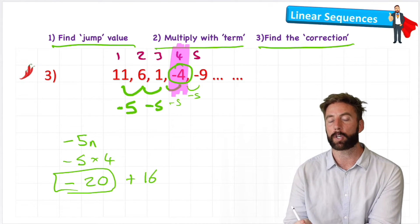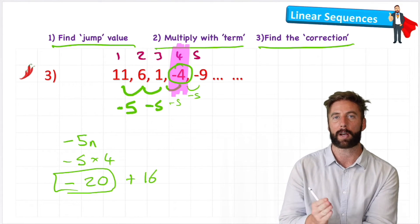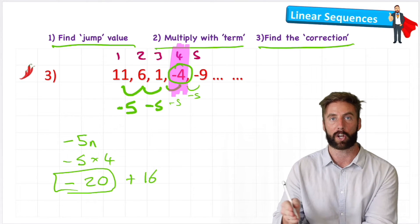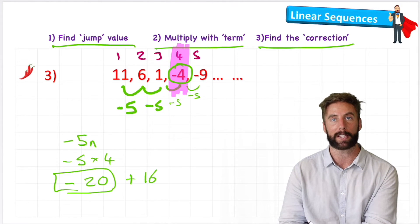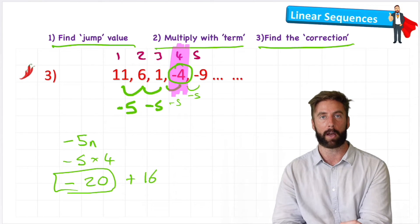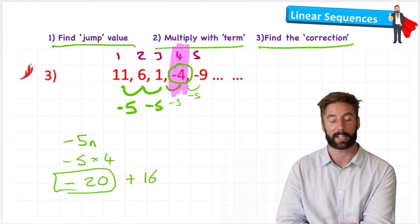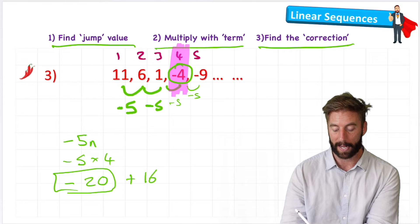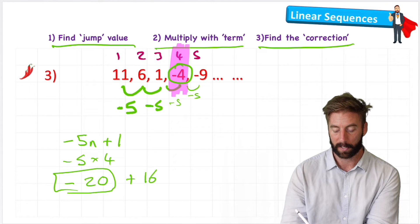So it's a little bit confusing because we're in negative numbers. So we have to understand which way around on our number line we're going to start going. If we're at negative 20 and we want to get to negative 4, we actually have to come back up the number line positively. So we plus 16. So my formula would be negative 5n plus 16.